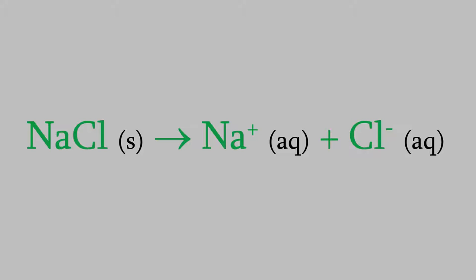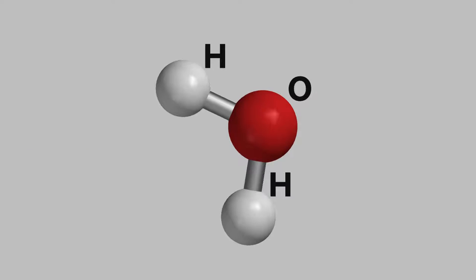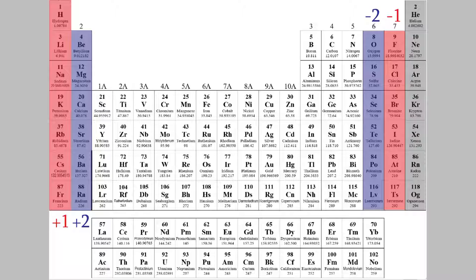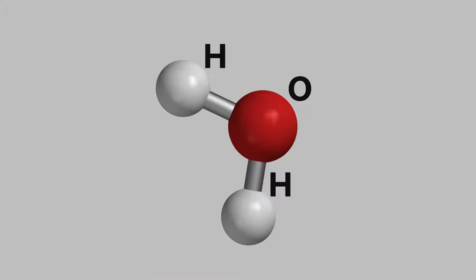So why do the salt molecules break apart into ions? The secret has to do with the molecules of water that they're dissolving in. If you look at a water molecule, you'll notice that it's V-shaped, so both of the hydrogen atoms are on the same side of the molecule. If you check the periodic table, you'll notice that hydrogen ions have a positive charge, and oxygen ions have a negative charge. Now in a water molecule, the hydrogens and oxygens aren't ions, but as we'll see later in the course, it's still true that the hydrogen side of the water molecule is more positive, and the oxygen side is more negative.